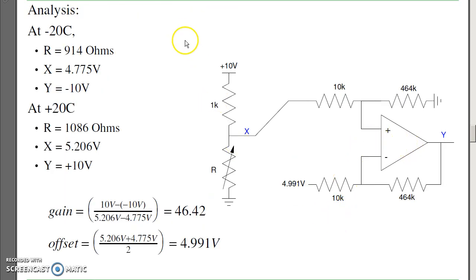Next, I want to convert resistance to voltage. One way to do that is use a voltage divider. This 1k resistor is fairly arbitrary. It tends to work best if the 1k is close to R, the nominal value of R. If I do choose a 1k resistor, then the voltage here at x is going to vary from 4.775 volts to 5.2 volts, as the temperature changes from minus 20 to plus 20C.